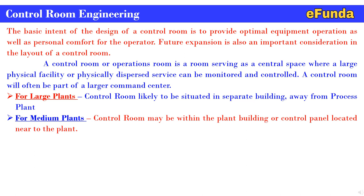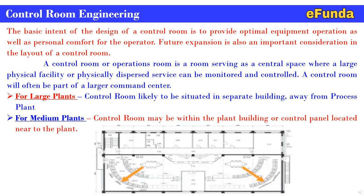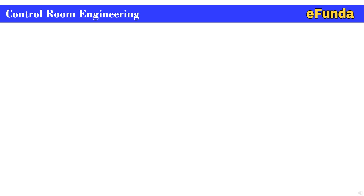For medium plants, the control room may be within the plant building or a control panel located near the plant. One can refer to the figure showing a typical control room layout. Further in today's video we will discuss control room engineering and the typical DCS system equipment arrangement categories.